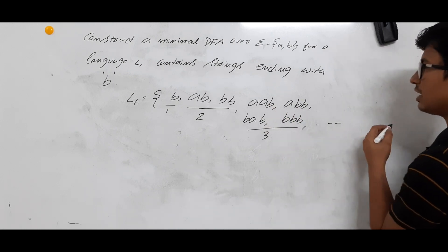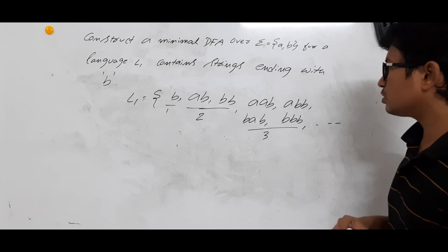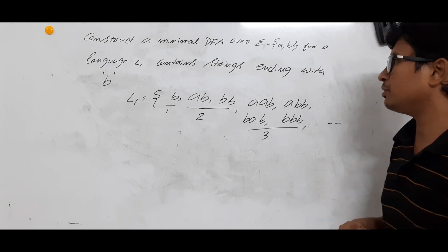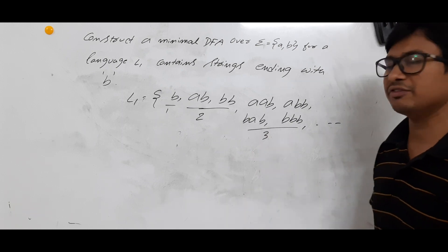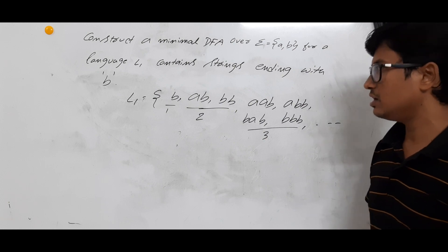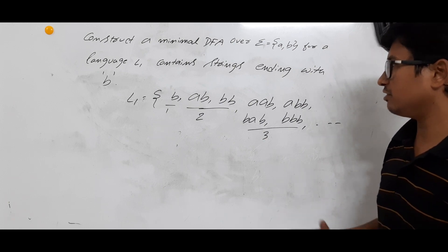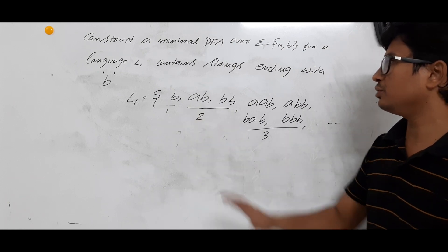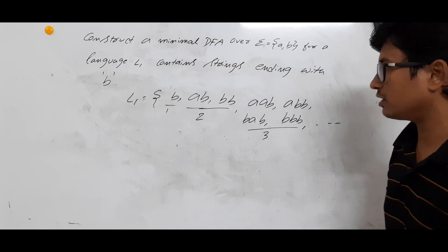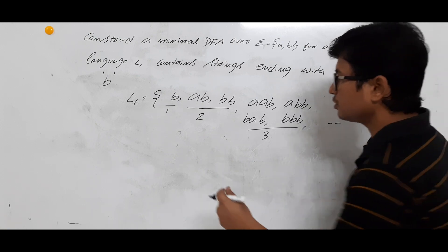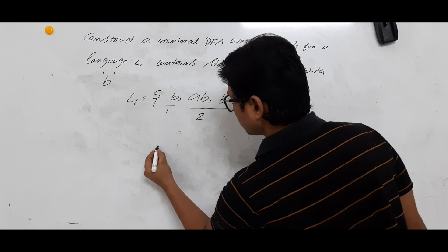We will have length 4, length 5, and so on. So this is an infinite language. Now we will start constructing the DFA, since we have identified what strings belong to language L1. We will construct the minimal DFA.